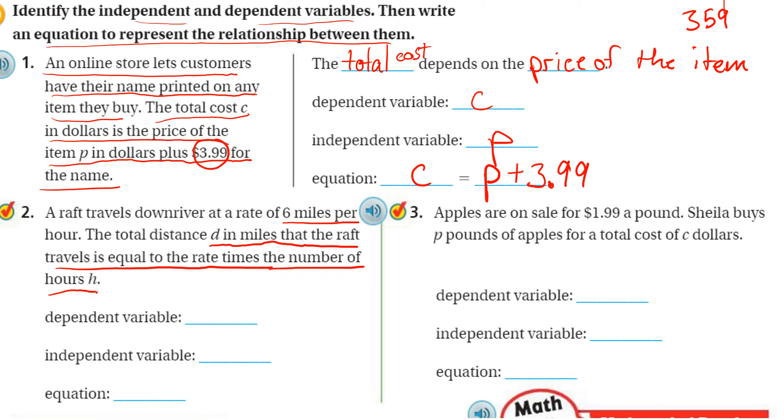Okay, so a raft travels downriver at a rate of 6 miles per hour. So we want to find the distance, right? I'm going to use, did they tell us what to use for distance? Yeah, D for distance. So we want to find the distance.